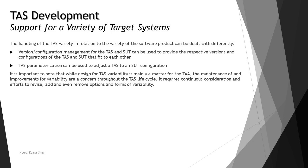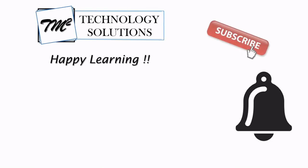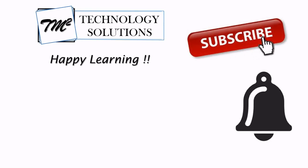That covers how a variety of target systems are supported by TAS development. That's all from this particular tutorial. We'll be coming back with the next chapter, but before that we'll provide sample questions from this chapter, so stay tuned. Till then, keep learning, keep exploring, and keep understanding the context. Feel free to comment below with any questions — I'll be there to address them. Thanks for watching and happy learning.